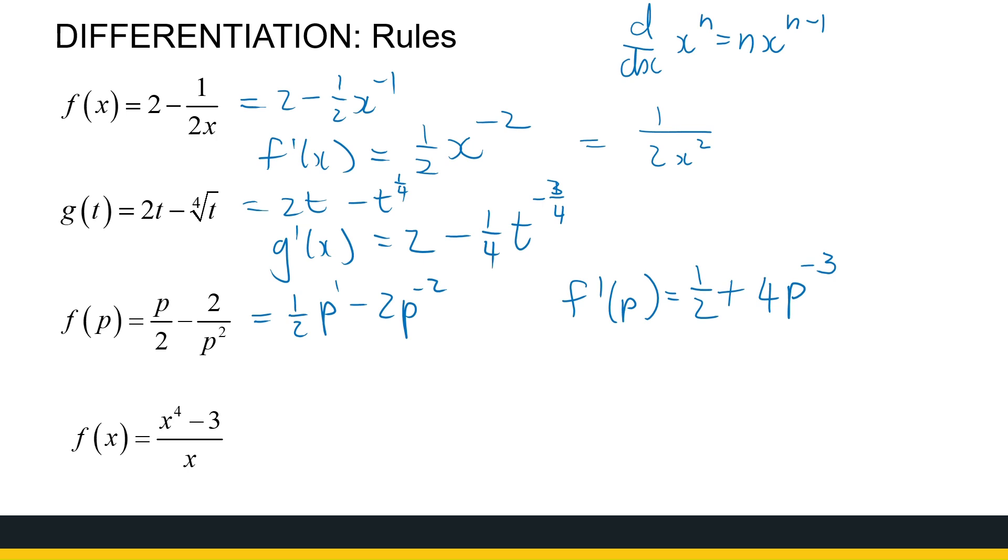The last one here, f of x, is x to the power 4 minus 3 divided by x. Now that's a complicated function, definitely not in the form of the rules we've seen in the previous page, but we can simplify that. I'm dividing by x, so I'm dividing by a single term, so that's the same as x cubed minus 3 over x, which is x cubed minus 3x to the power minus 1.